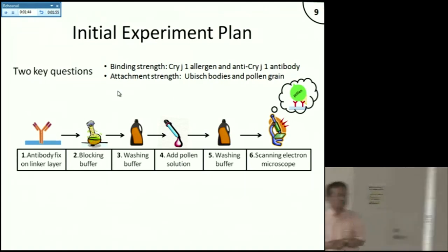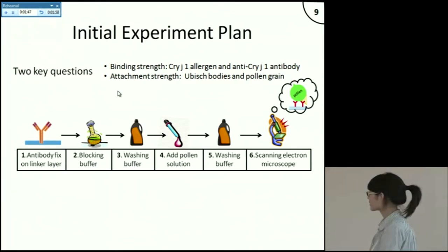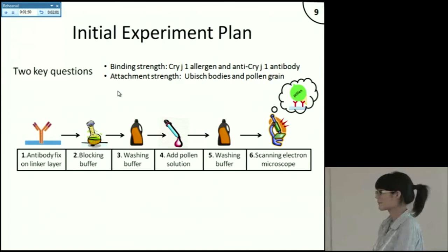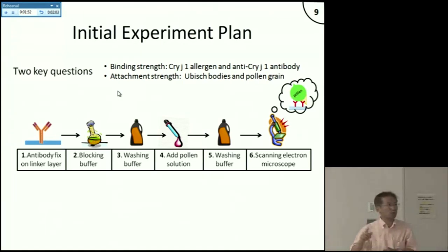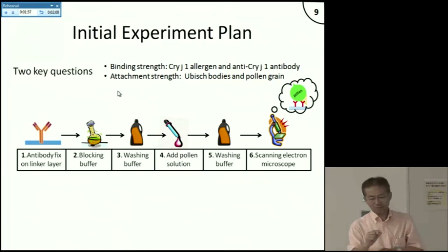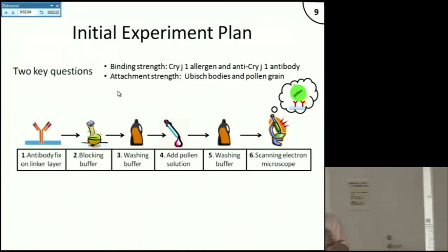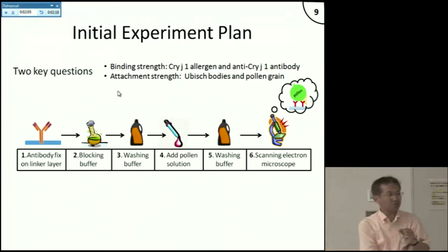The pollen sizes vary from 10 micrometers to 100 micrometers. So at 100 micrometers, that would be 0.1 millimeters — it's visible to the naked eye. If it's visible, you don't need any detector.